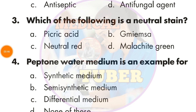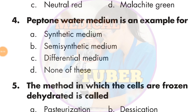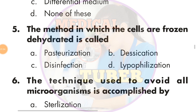Question number 4: Peptone water medium is an example for — the answer is B — semi-synthetic medium. Question number 5: The medium in which the cells are frozen and dehydrated is called —